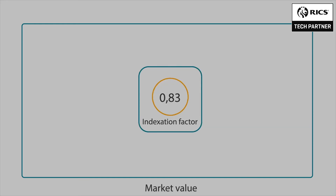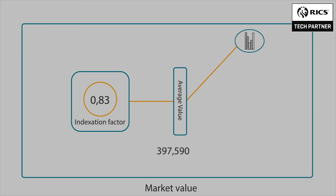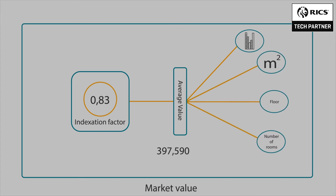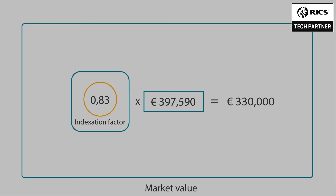The indexation model provides an indexation factor which is the outcome of calculations based on average value data corrected by other important parameters such as microlocation, city area, property size, floor count, number of rooms, construction and adaptation year. Market value is subsequently a result of applying the final indexation factor to the previously determined average value per square meter of similar property, times the size of the property.